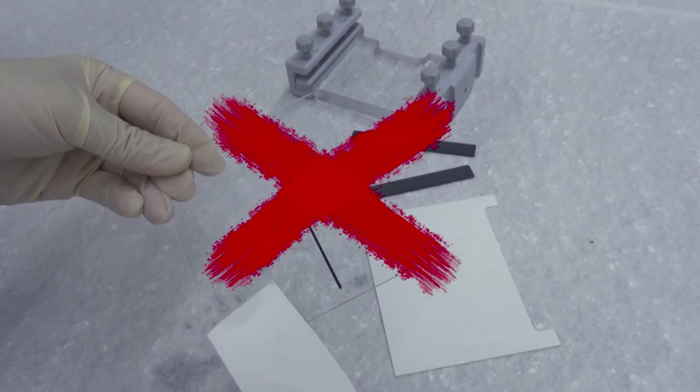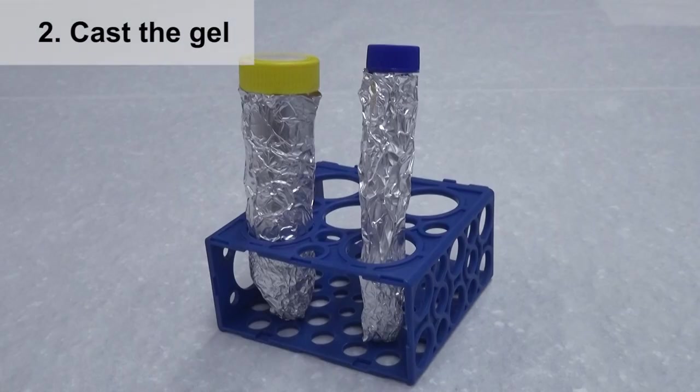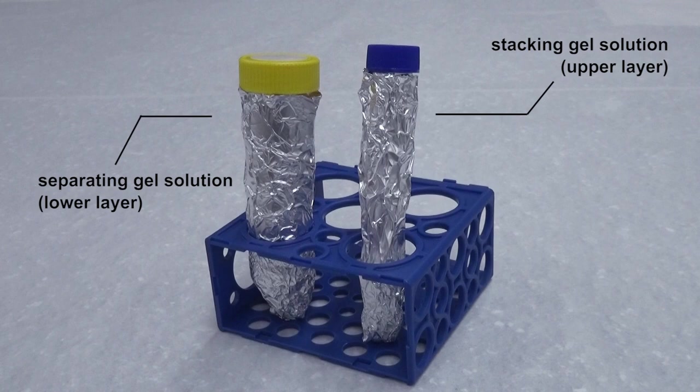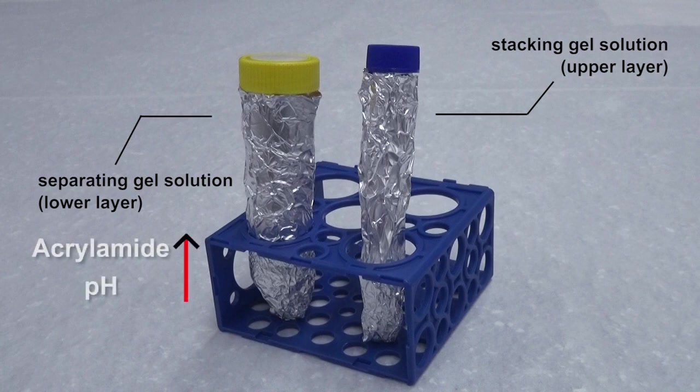The gel used in this experiment has two layers. The composition and pH are different for the upper and lower layers. Hence its name, discontinuous gel electrophoresis system. The lower layer has a higher acrylamide concentration and pH value than the upper layer. Do not switch them.